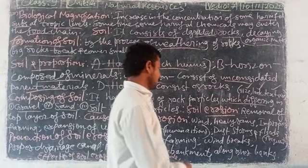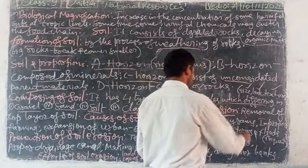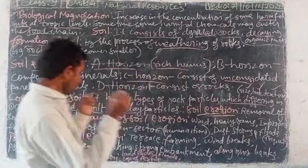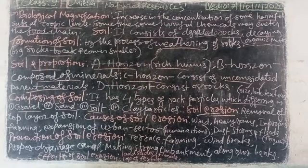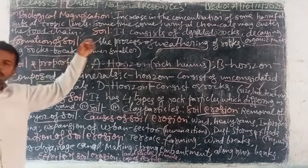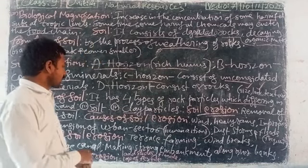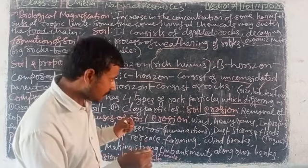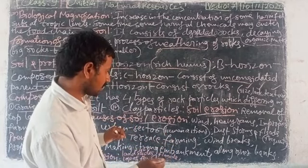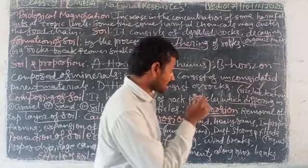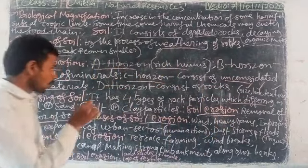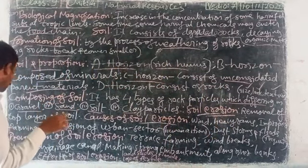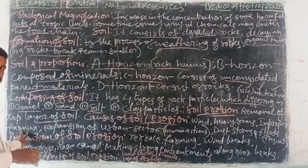Soil erosion is the removal of the top layer of soil. The causes of soil erosion include wind, heavy rains, floods, and improper farming.